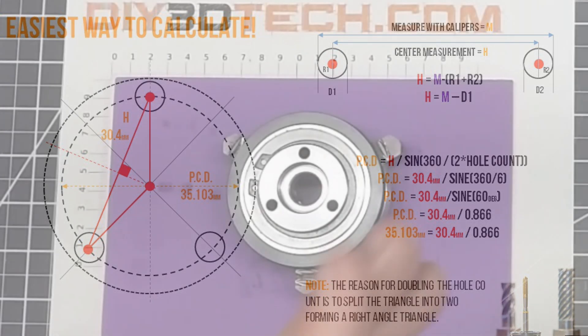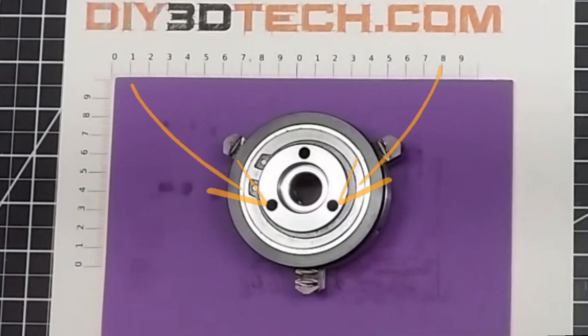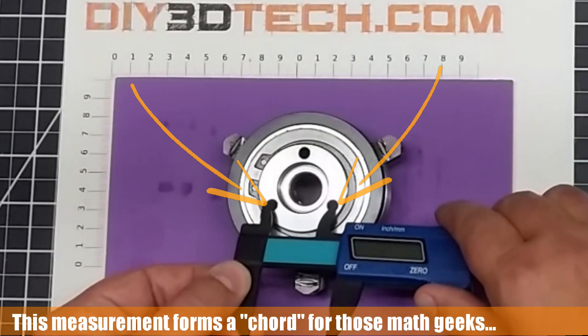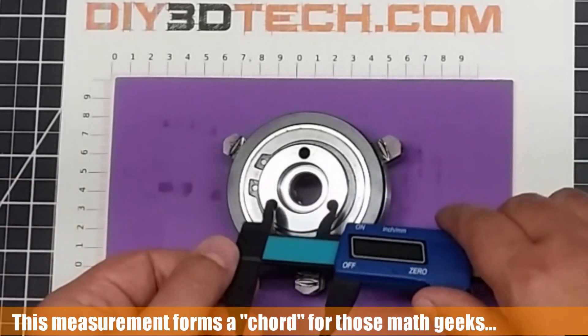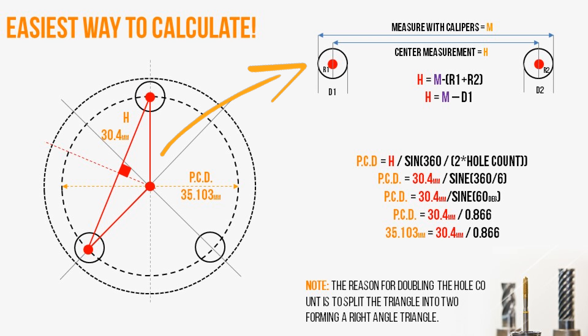First thing we need to do is know the center of each one of these holes. How do we do that? We take a set of calipers and measure the outer diameter from the outside of each circle. Then we do a little math on that, because we have a distance from the outer side of each circle as in the drawing.